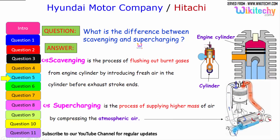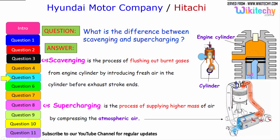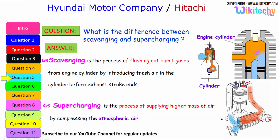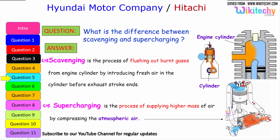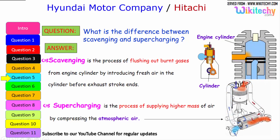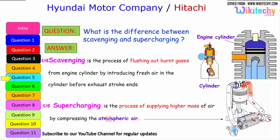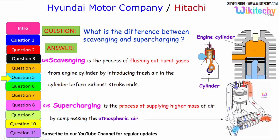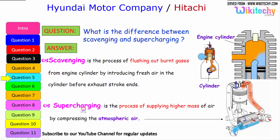What is the difference between scavenging and supercharging? Scavenging is the process of flushing out the burnt gases from the engine cylinder by introducing fresh air into the cylinder before the exhaust stroke ends. Supercharging, on the other hand, is the process of supplying higher masses of air by compressing it above atmospheric pressure — that is referred to as supercharging.